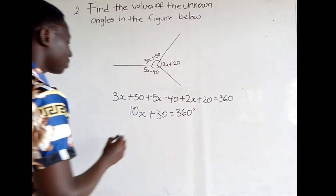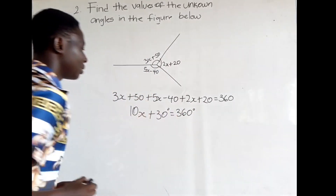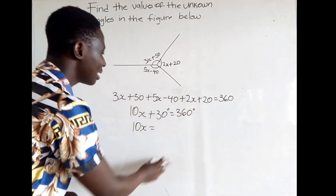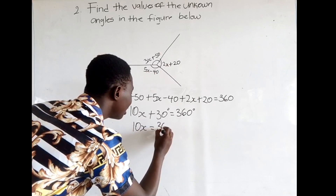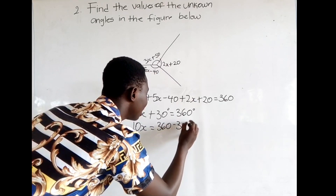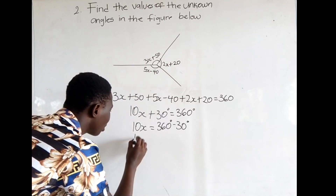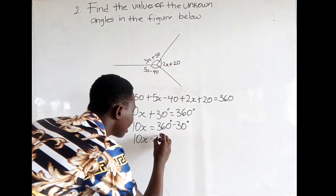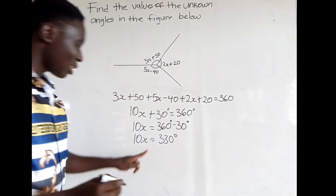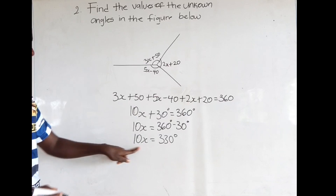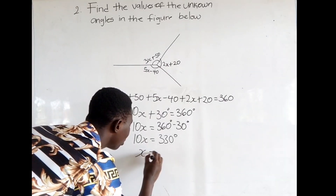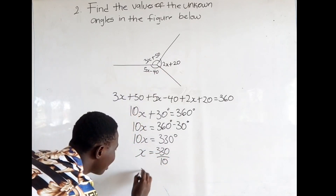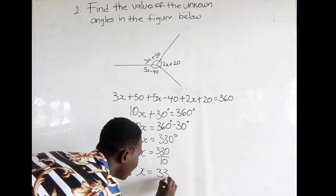50 minus 40 is 10, and 10 plus 20 is 30. So 10x plus 30 is equal to 360 degrees. Making x the subject, we send 30 to the other side: 10x is equal to 360 minus 30, which is 330 degrees. Dividing both sides by 10, x is equal to 330 over 10, so x is equal to 33 degrees.